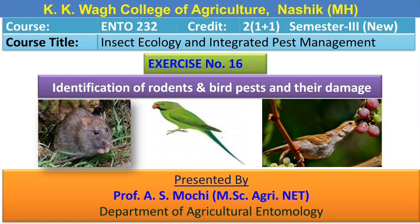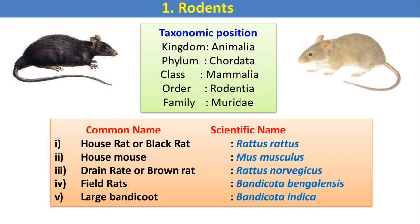As we know, rodents and birds are non-insect pests of field crops which reduce the yield in our crops. We should know about the different species of rats and birds which damage our crop. The first is the rodents — they are mammalian organisms, order Rodentia, family Muridae.